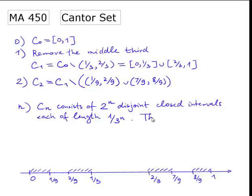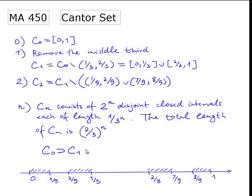Now what we have is that the total length of set Cn is a product of these two numbers, which will be (2/3) to the power of n. Also we can see that the interval Cn contains set C1 which in turn contains set C2. We have a sequence of sets.